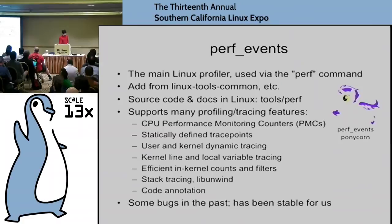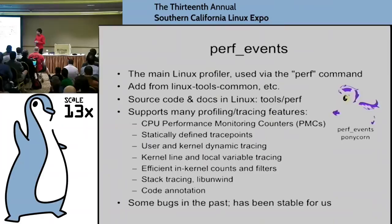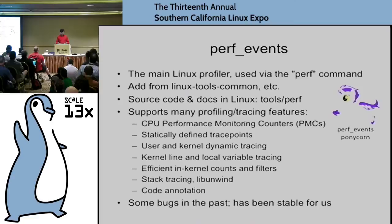As a crash course: perf events is the main Linux profiler, used with the perf command, usually packaged as linux-tools-common. It's really useful to learn if you're not already using it. It's in the main Linux kernel code, so it's heavily maintained — in the last few releases there have been lots of improvements. A big advantage of being in mainline is it gets maintained and is generally very reliable. It has lots of features: CPU performance monitoring counters, trace points, dynamic tracing, and more.